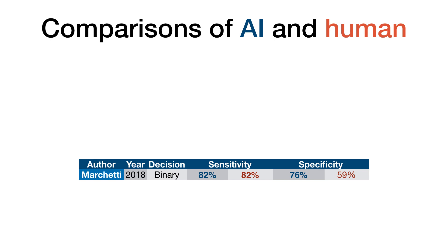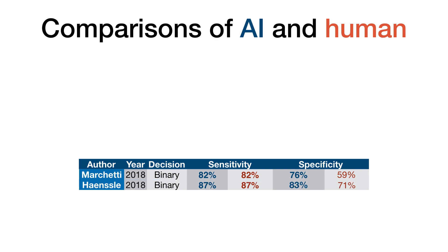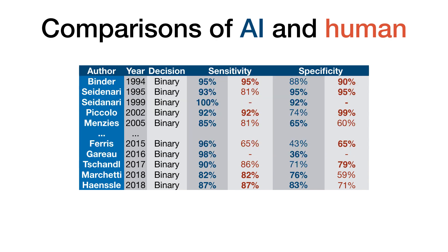In brief, they found superior specificity of the machines when fixed to the same sensitivity as humans. Similar superiority was found by a German group recently. In fact, research groups around the world have found similar results since decades.